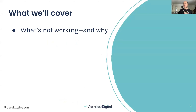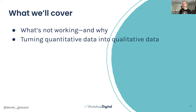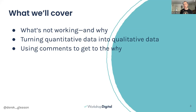We're going to cover four things. First, why quantitative data that so many of us have relied on for years is just not working for content research and informing a good content strategy. Then we'll look at three ways to get qualitative research right: improving quantitative data with a qualitative layer on top, using comments to get to the why, and a little bit of heuristic SERP analysis — heuristic meaning subjective expert opinion, SERP being search engine results page.